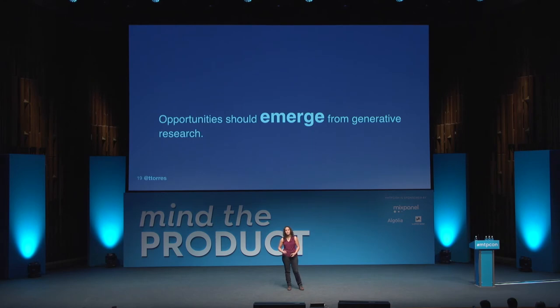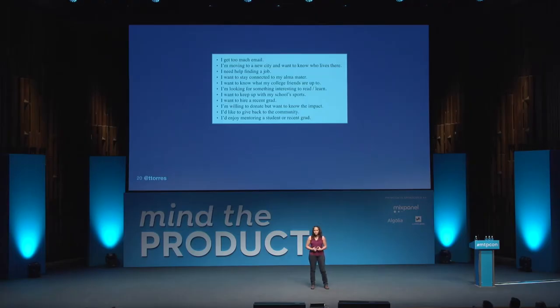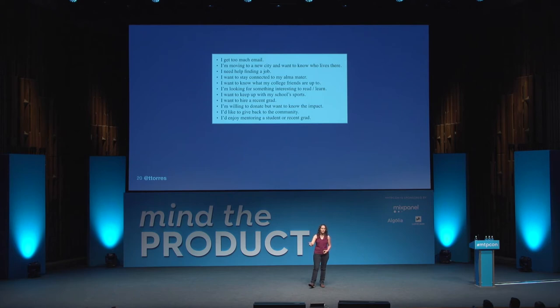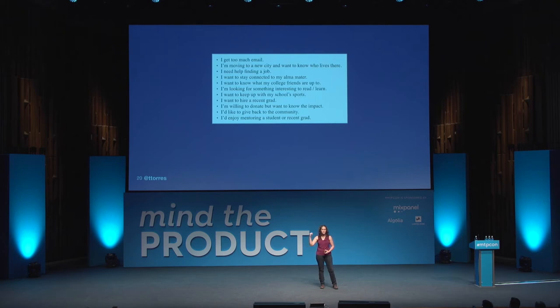Our opportunities should emerge from our generative research — from customer interviews and customer observations. To stay user-centered, I encourage teams to frame an opportunity as something a customer would actually say. My team had done a bunch of user research. We knew that alumni were getting way too much email — that's what led to the spam problem. We knew they wanted advice from alumni near them about where to live. We knew they needed help finding jobs. We knew they wanted to give back to the community.